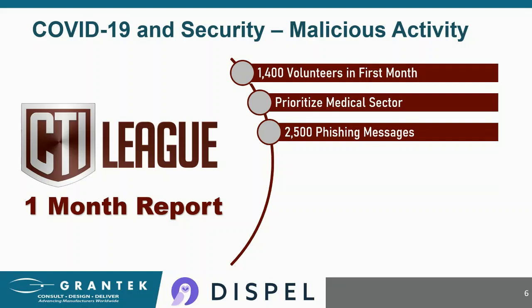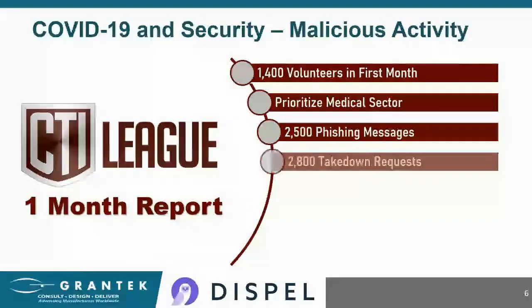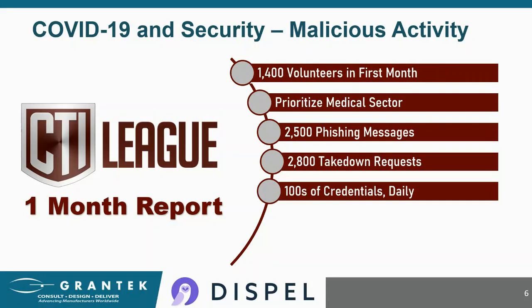They issued a report on the precise numbers of what they've seen and been able to detect and act on. In one month, they confirmed over 2,500 phishing messages targeting the healthcare sector. They also submitted 2,800 takedown requests for malicious domains targeting the healthcare sector — 2,800 in a month, and that's not counting ones found since the report. They also search illegal online markets for stolen credentials, identify which organizations they belong to, and report them back to the health organization, finding hundreds every day.